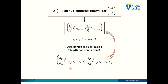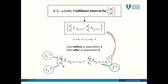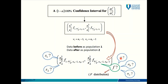What information do we need from the problem in order to find the confidence interval? We need to find the sample standard deviation for both populations, and we also need to find the two different critical values. In order to find the critical values, we need to know alpha, the sample size for the before population, and the sample size for the after population. We'll be looking at these critical values from the F distribution.